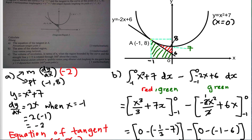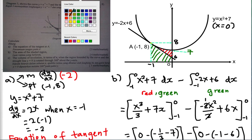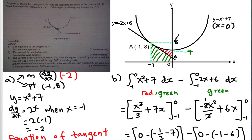Now for part C — the volume of revolution. The region bounded by the curve and the line y = 9 is rotated 360 degrees about the y-axis. First I draw the line y = 9, which is slightly above y = 8. The region between the curve and y = 9 is the blue shaded area, and rotating this about the y-axis will form a cone-like shape.